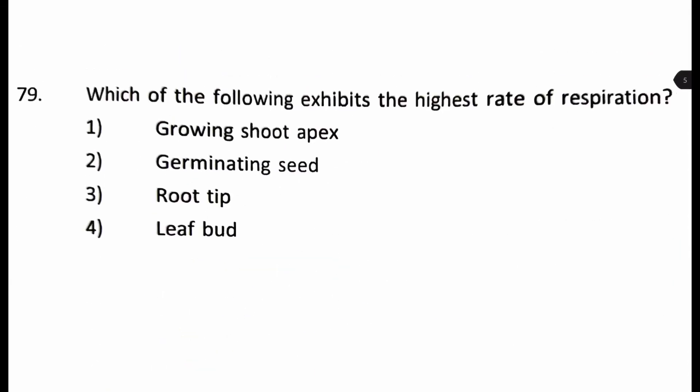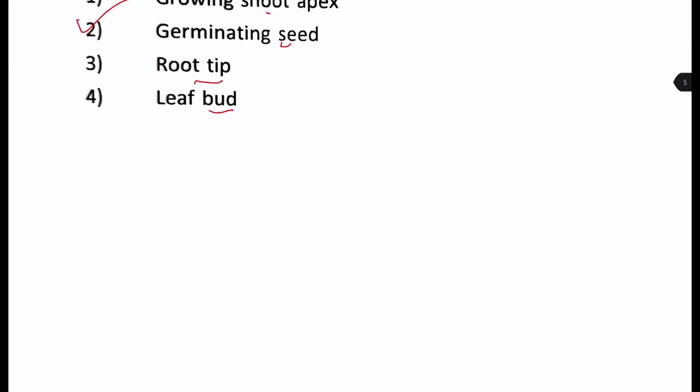Which of the following exhibits the highest rate of respiration? Is it growing shoot apex, germinating seed, root tip or leaf buds? It's a fact-based question and very easy actually. It's always the germinating seed which requires the highest rate of respiration because they respire to fulfill the high energy needs of a seedling. Right. And we have also done this experiment in our college B.Sc. Right. Okay.